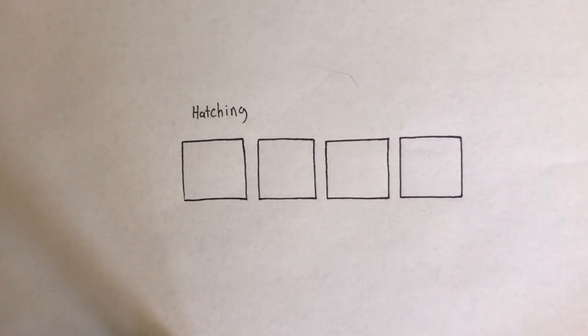So this first technique is called hatching, and hatching is one of the most basic forms of shading while using a pen. It's also a very effective way of showing value, which is light and dark, in a drawing.